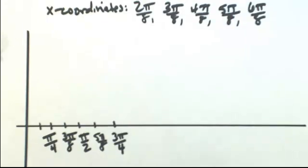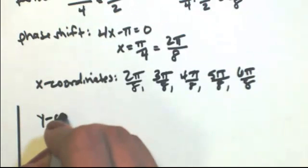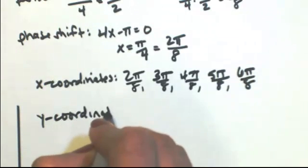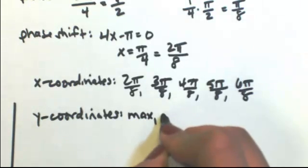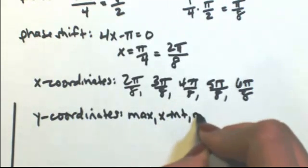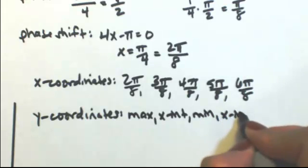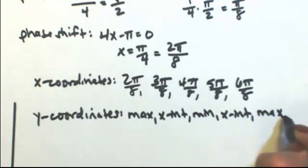The next thing I need are the y-coordinates. So because the amplitude is one-half, that will be our max. So because we have a cosine, we're going to start at a max, and then an x-intercept, then a min, x-intercept, ending at a max.